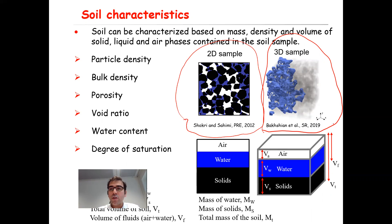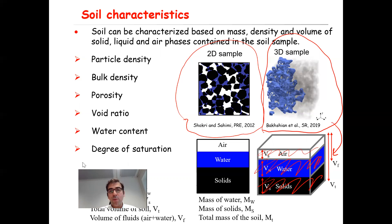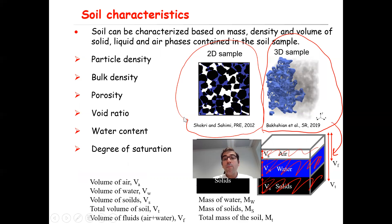You can partition this volume into: Vs, the volume of the solid; Vw, the liquid or water phase; and VA, the air phase. Depending on the relationship between VA, Vw, Vs, and the mass of different phases, you can define different properties of this porous media, including particle density, bulk density, porosity, void ratio, water content, and degree of saturation.